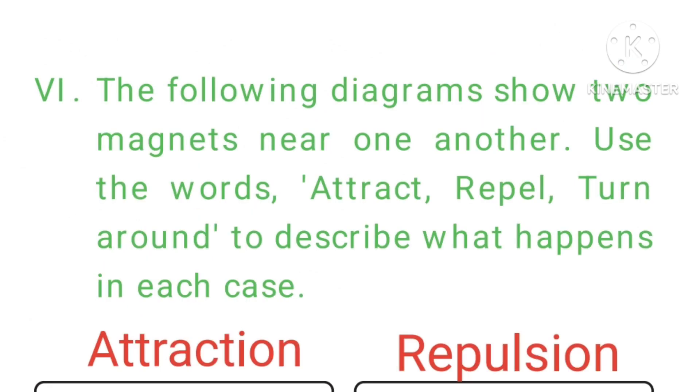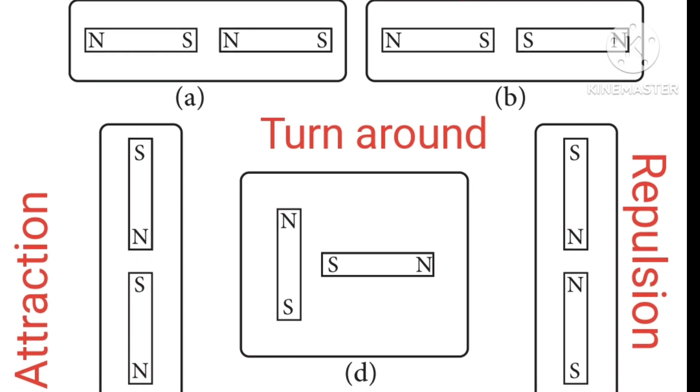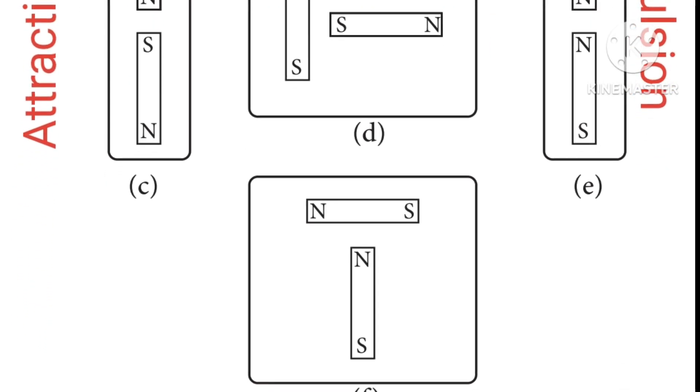Roman letter 6. The following diagram shows two magnets near one another. Use the words attract, repel, turn around to describe what happens in each case. The answer is marked below each option. Look and mark.